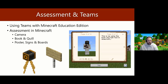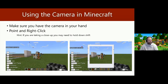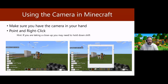With that in mind, let's look at some of the ways we as teachers can assess student learning. It is a game, but it's also a learning tool, and there are great ways to assess learning both formatively and summatively using tools embedded right within Minecraft. The three main things we're going to look at today are the camera, the book and quill, and variations of signs, posters, and boards.